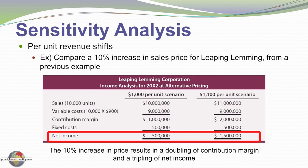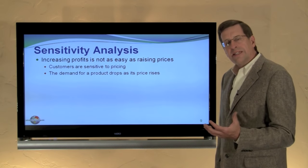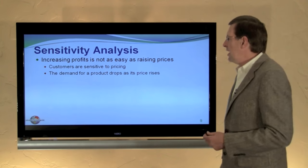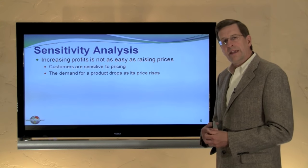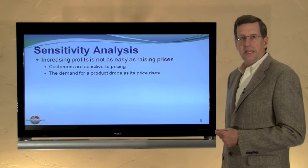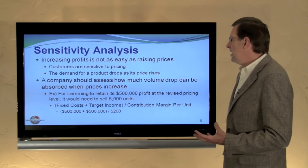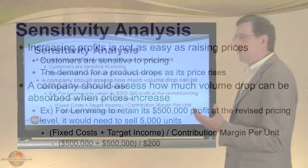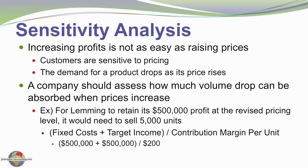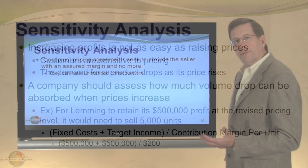That significant change in profitability is a function of our cost structure. However, the analysis assumed rather cavalierly that we could raise prices ten percent — customers may be very sensitive to pricing and we could see a significant drop in demand. Further analysis may be required. If Lemming desires to at least maintain its five hundred thousand dollars of profit when it increases its price, we need to assess how much volume drop could be absorbed. We could actually see sales cut in half to only five thousand units: fixed cost of five hundred thousand plus the five hundred thousand dollar target income, divided by the two hundred dollar per unit contribution margin, gives us five thousand units.